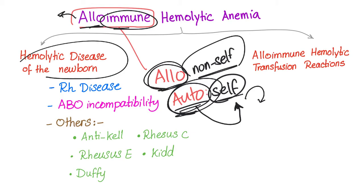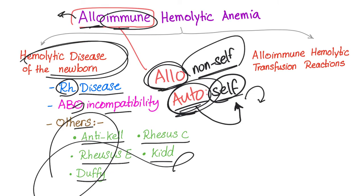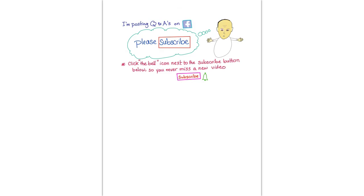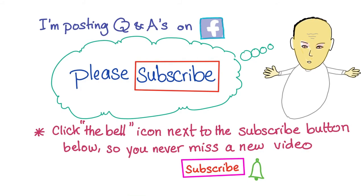We have hemolytic disease of the newborn, which can have different subtypes: RH disease, ABO incompatibility, and others such as anti-Kell, Rh C, Rh E, Kidd, and Duffy. In the next video, we'll talk about hemolytic disease of the newborn. Please don't forget to subscribe — new videos are coming. And like us on Facebook; I'm posting a lot of questions and answers there. Thank you so much.